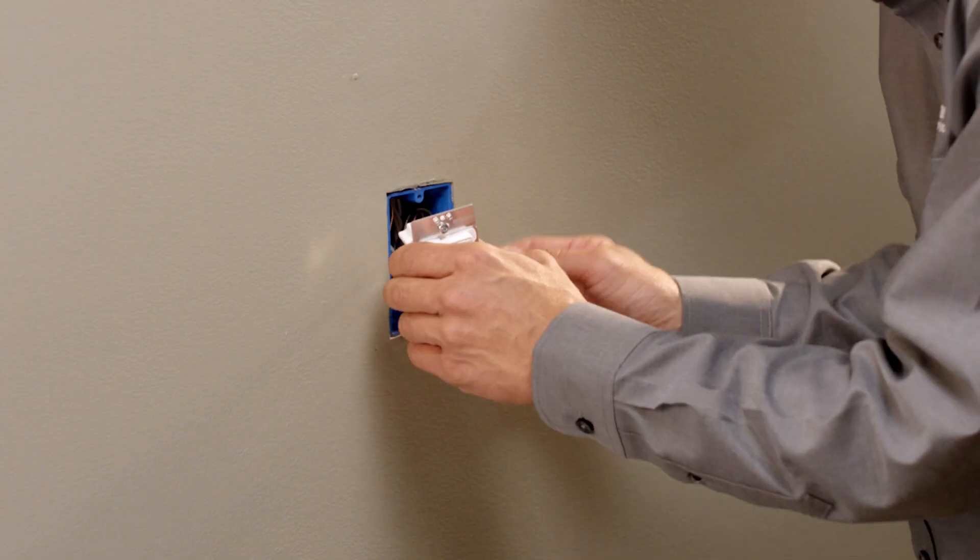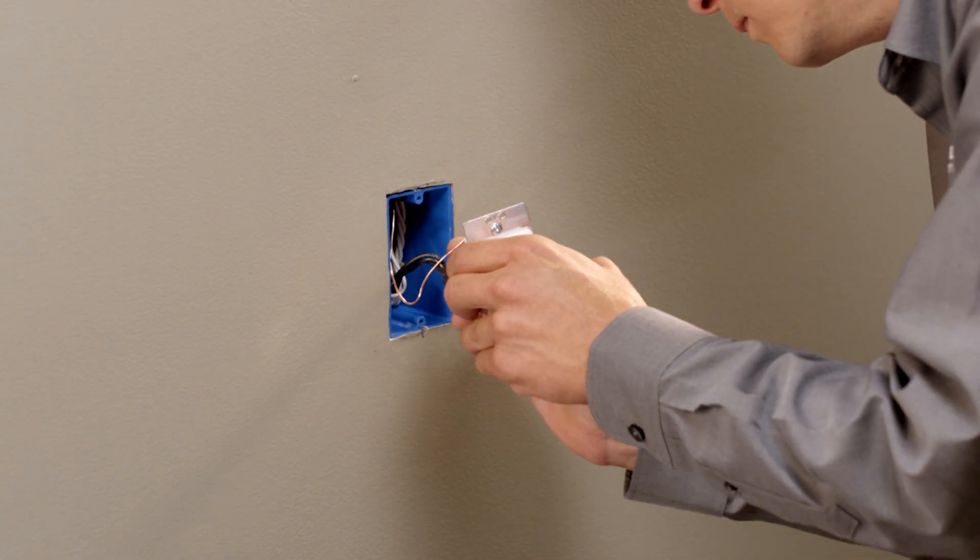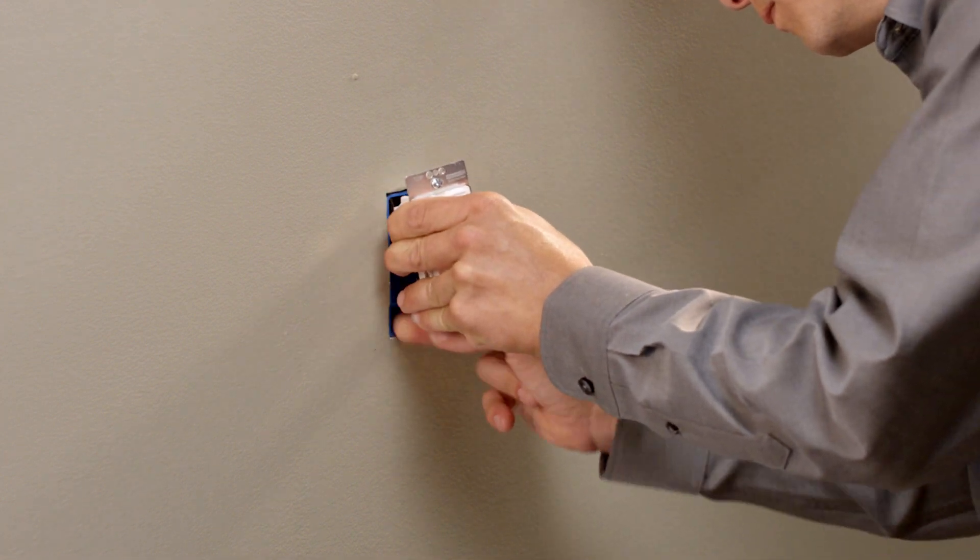Insert the dimmer into the wall box, being careful not to pinch any wires against the device and the box.